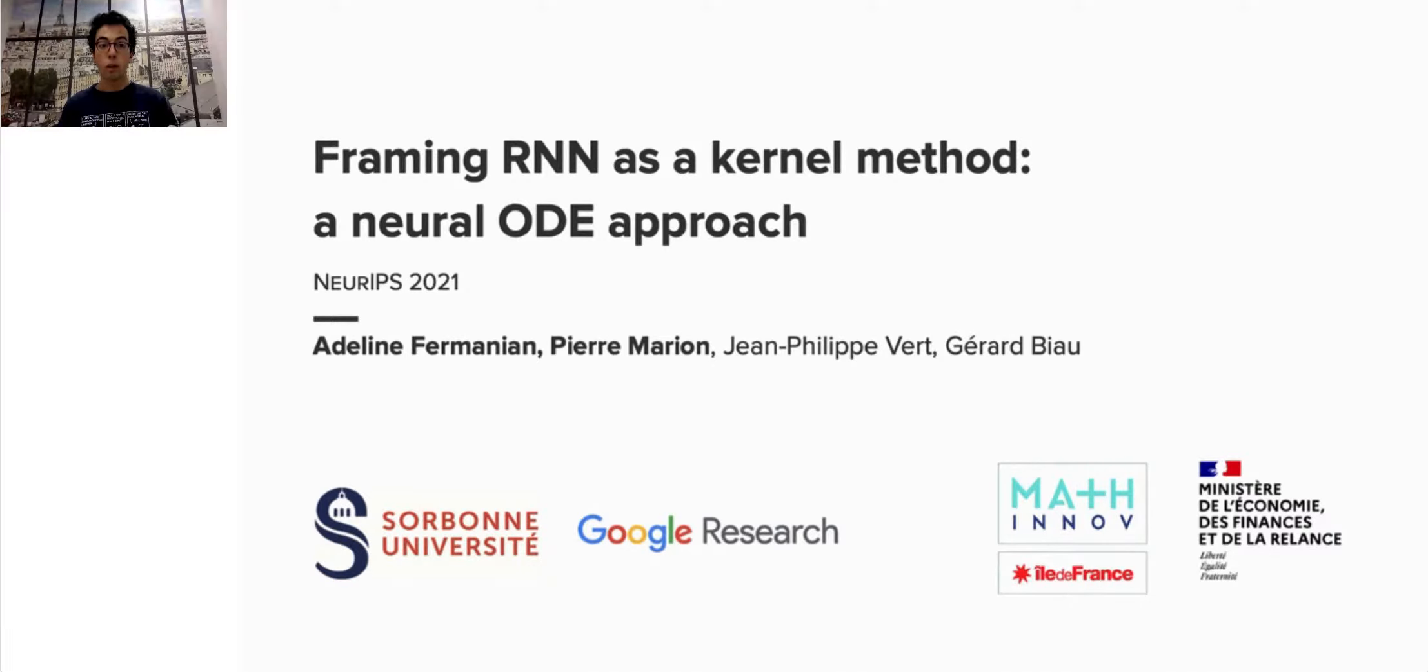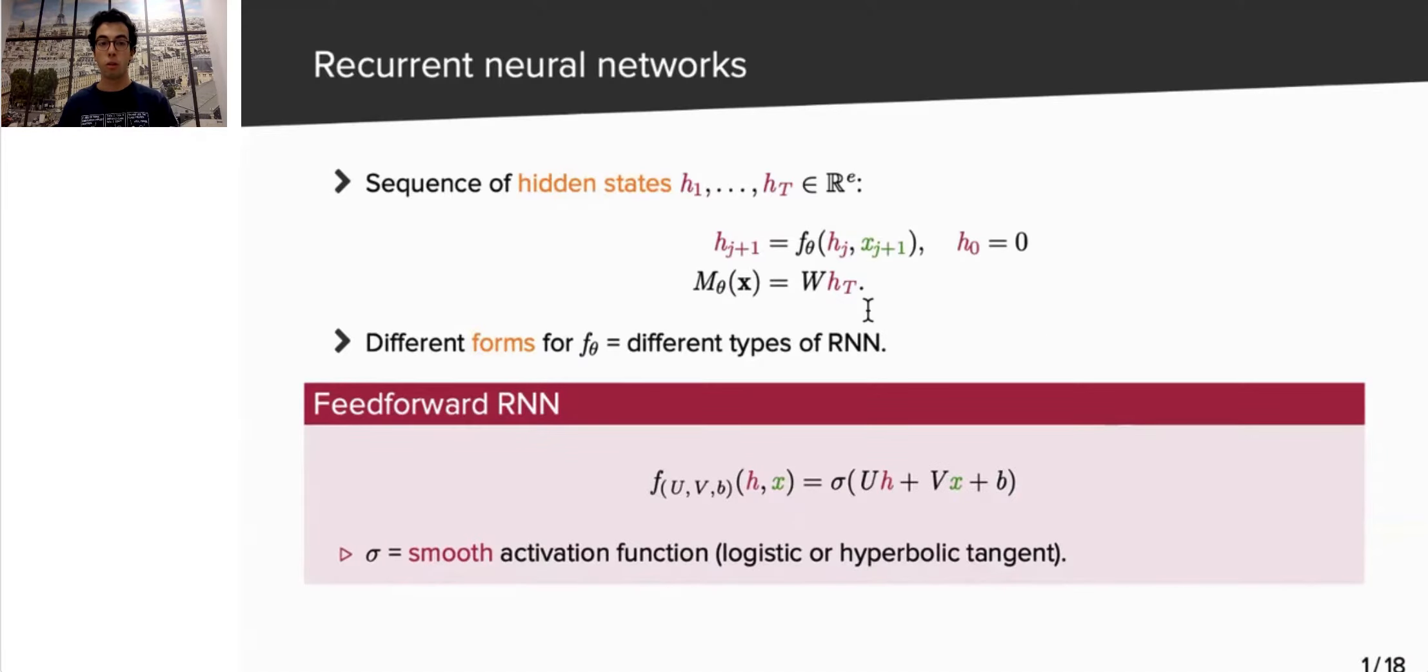The goal of our work is to derive theoretical guarantees for recurrent neural networks. As a reminder, a recurrent neural network, or RNN, is defined by a sequence of hidden states H1 to HT. At each time step j, we compute the new hidden state Hj+1 as a function of the previous hidden state Hj and of the new data point Xj+1.